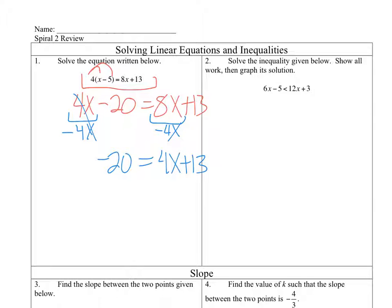To get rid of the 13, I'm going to subtract 13 from both sides. Negative 33 is equal to 4x. Which means that x is equal to negative 33 over 4.